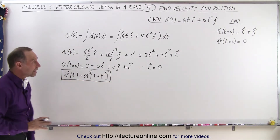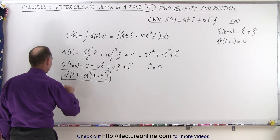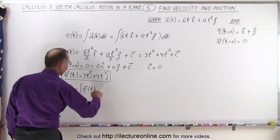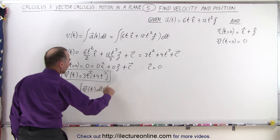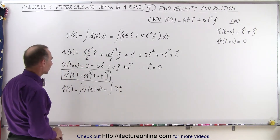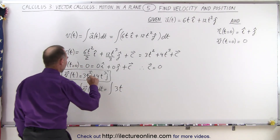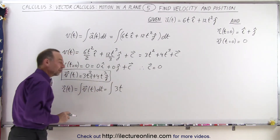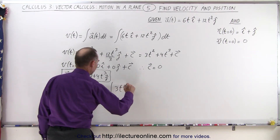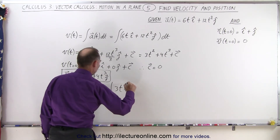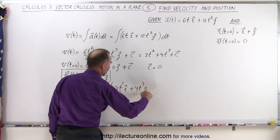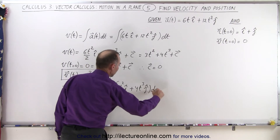Now we need to find the position vector. The position vector r as a function of time is going to be the integral of the velocity vector dt. We can't forget the i and j directions because this is a vector. So we have 3t squared in the i direction plus 4t cubed in the j direction, all times dt.